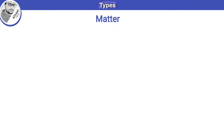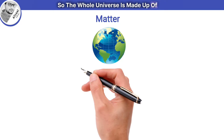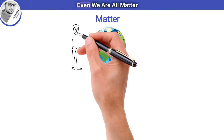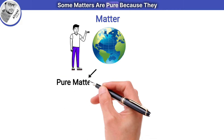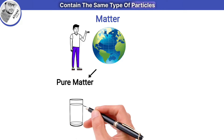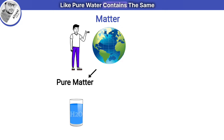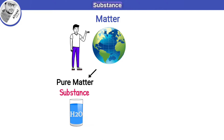Let's start with matter and its types. Everything that has mass and occupies space is known as matter, so the whole universe is made up of matter — even we are all matter. Some matters are pure because they contain the same type of particles, like pure water contains the same type of particles, H₂O. So pure matter is known as a substance.